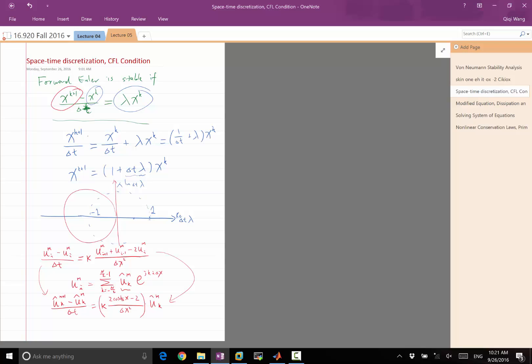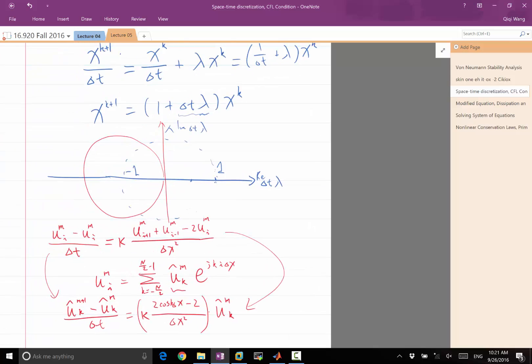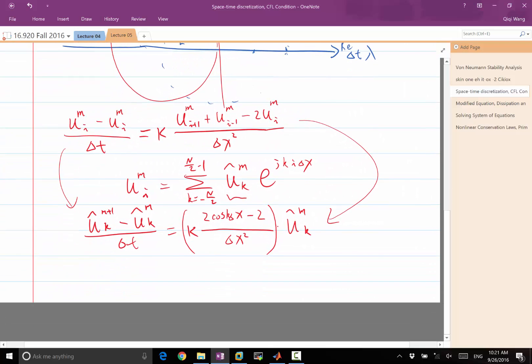Somebody tell me how do I analyze stability of this PDE now discrete in both space and time? This is the same as our lambda. So we want to analyze 1 plus delta t times this kappa 2 cosine k delta x minus 2 over delta x squared. This thing has to be less than 1.